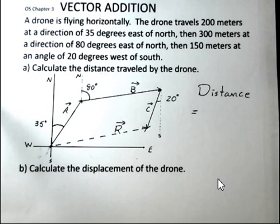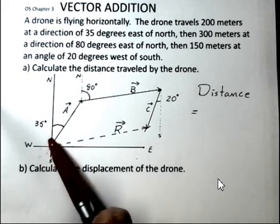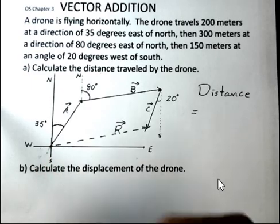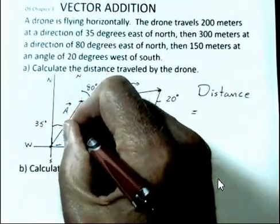A drone flying horizontally, we're not going to worry about up and down motion. The drone travels 200 meters from the starting point at a direction of 35 degrees east of north. That's vector A that I've put in here. The length of vector A is 200 meters.